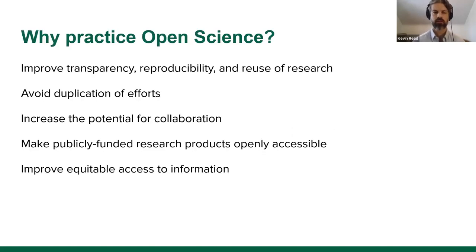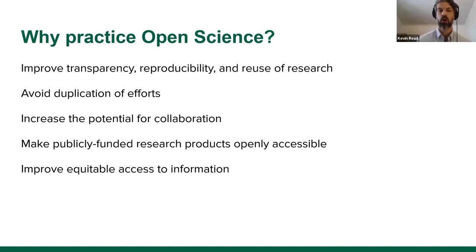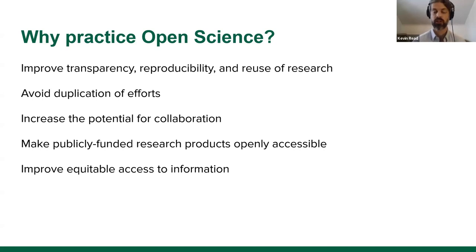The push towards practicing Open Science is to help improve the transparency, reproducibility, and reuse of research. If all research is openly available, others can use it, interpret it, and help inform other studies. It also avoids duplication of efforts — rather than reinventing the wheel, we can use other people's methodologies or code. It makes publicly funded research freely accessible to everyone and improves equitable access. We're seeing a dramatic shift towards this in Canada.